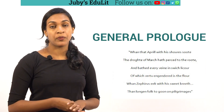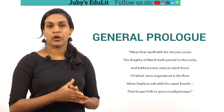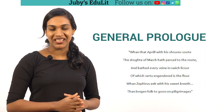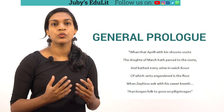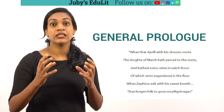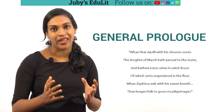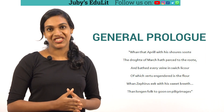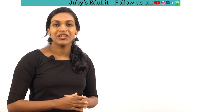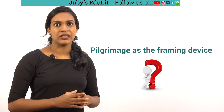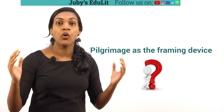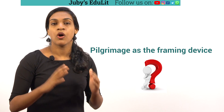Now let's look at the General Prologue of the Canterbury Tales. The General Prologue sketches the characters and sets the scene for the work. It begins with a description of the return of spring, and the narrator says this is the time — the return of spring — when people have the desire to go on pilgrimage. Canterbury Tales is all about pilgrimage, and Geoffrey Chaucer used pilgrimage as the framing device.